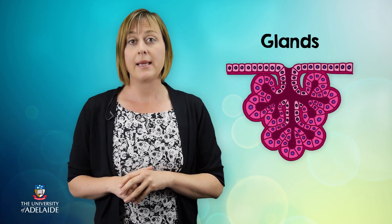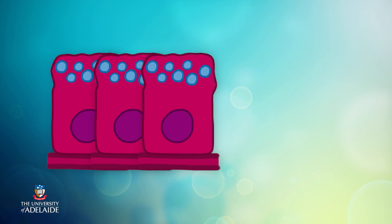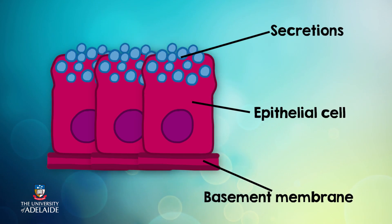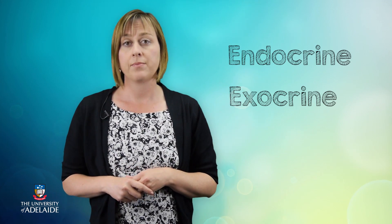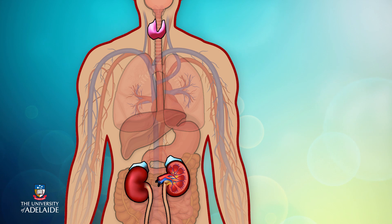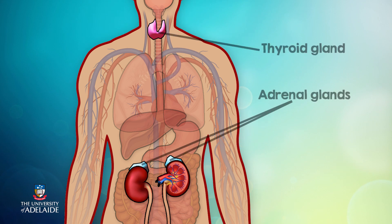Glandular epithelium, or more simply, glands, are clusters of epithelial cells that produce secretions. There are two types of glands found within the human body: endocrine and exocrine glands. Endocrine glands release their secretion into the bloodstream, where it's transported to other parts of the body. Examples of endocrine glands include the thyroid and adrenal glands.